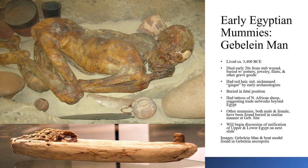Below the image of the Gebelein man you can see a boat model found in a similar burial site. This model suggests that the Egyptians had access to boats and that they used boats to travel up and down the Nile.